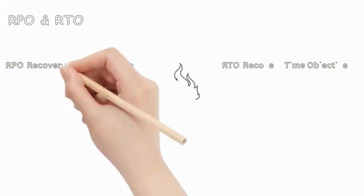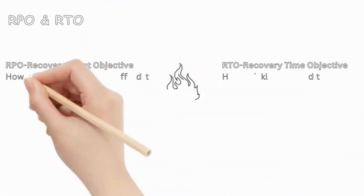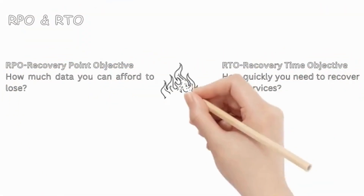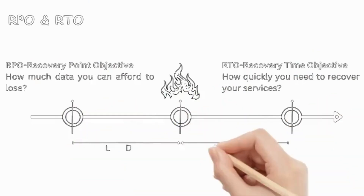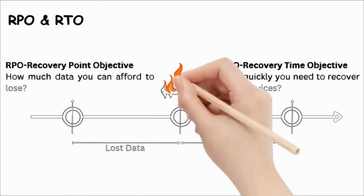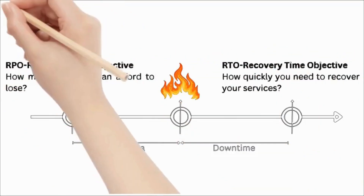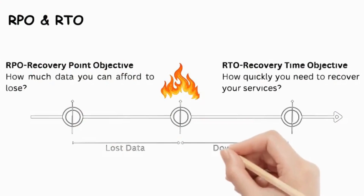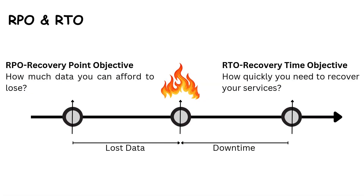Now, how do RTO and RPO work together in disaster recovery? When a system failure happens, your RPO determines how much data you'll lose, while your RTO defines how quickly your systems must be restored. Ideally, you want both values to be as low as possible without exceeding your budget.